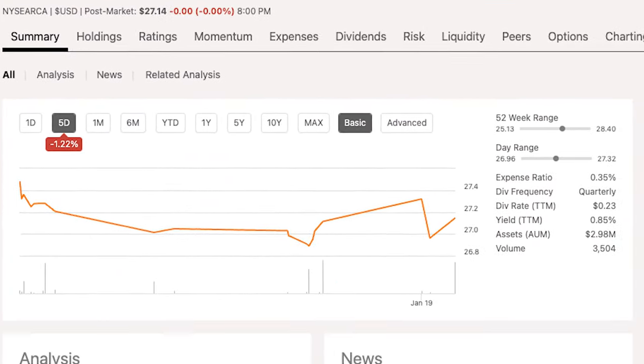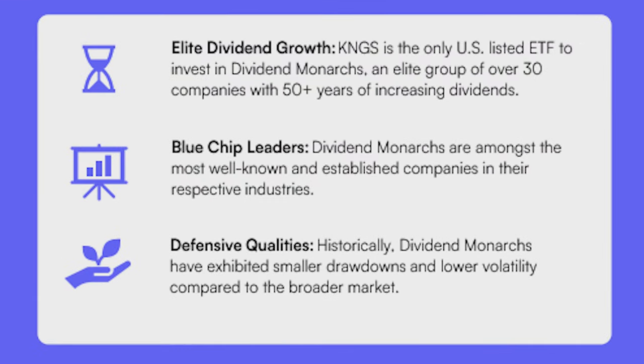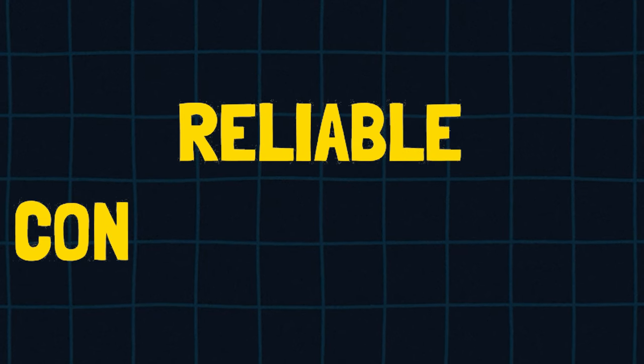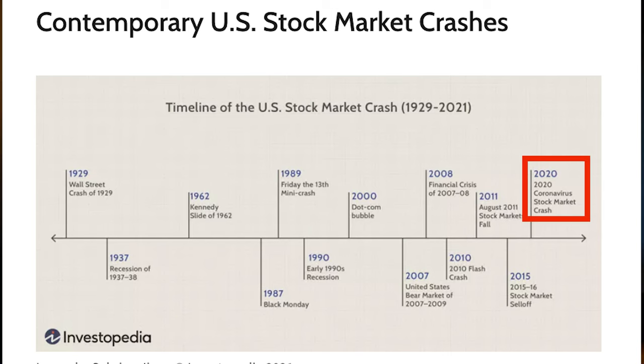KNGS is the Dividend Monarchs ETF. On the summary tab in Seeking Alpha, we can see it seeks to track the S&P Dividend Monarchs Index. After Googling the index, we can see that for a company to be included in KNGS, it must have increased its total dividend every year for at least 50 consecutive years. Any company that's pulled this off is reliable and has had consistent growth — two qualities you absolutely want in dividend growth investing. This also means the company survived several market crashes, most recently COVID-19 in 2020, the financial crisis of 2008, and the dot-com bubble before that.